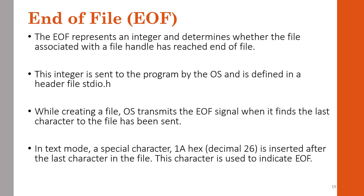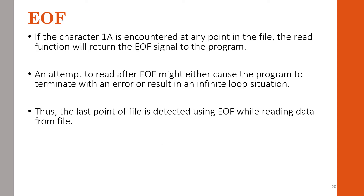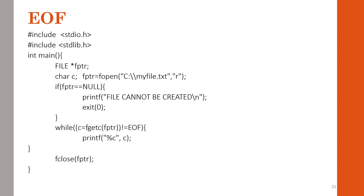EOF (End Of File) is a signal from the operating system indicating the end of a file. When reading a file, if EOF is reached, the file loop stops execution. The contents of the file are read, then displayed on screen. After use, the file opened for a purpose is closed.